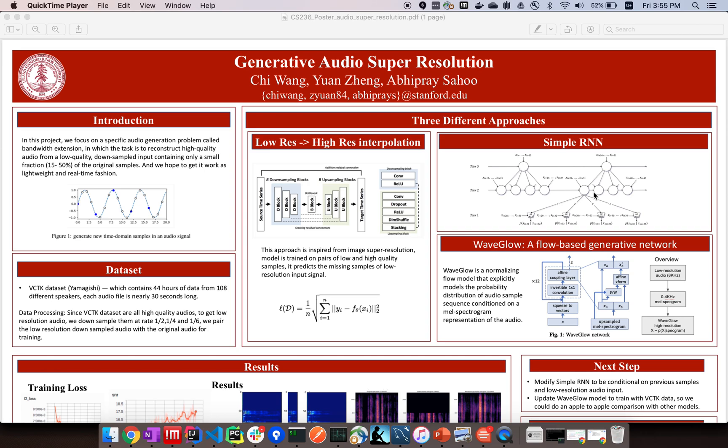The WaveGlow is a normalizing flow model that explicitly models the probability distribution of audio sample sequence conditioned on a mel-spectrogram representation of the audio. It generates samples by first drawing a hidden random vector from a standard normal distribution and applying a bijective series of transformations to get audio samples. It trains by maximizing the log likelihood of the data.